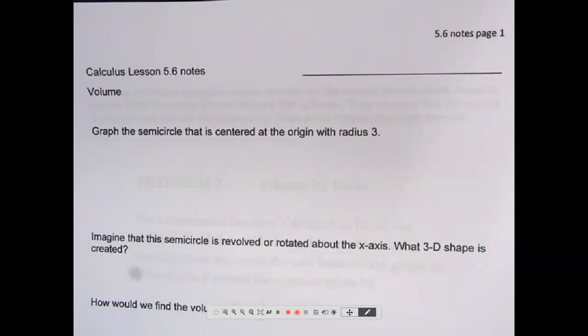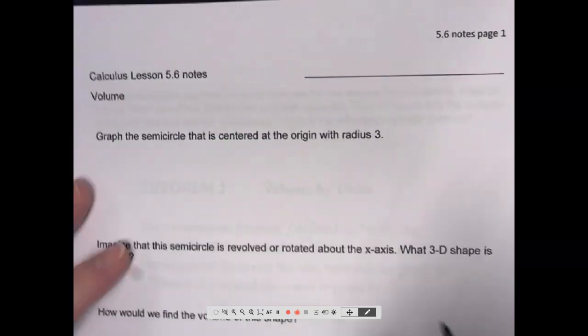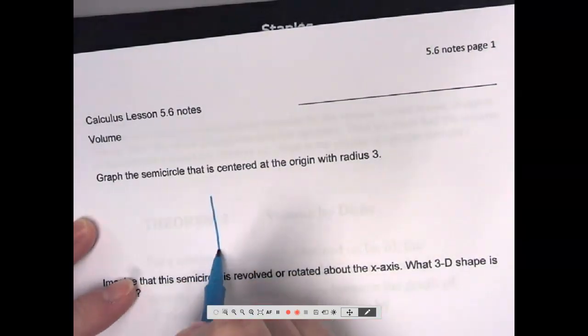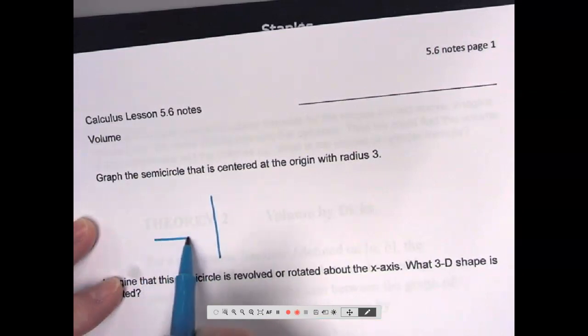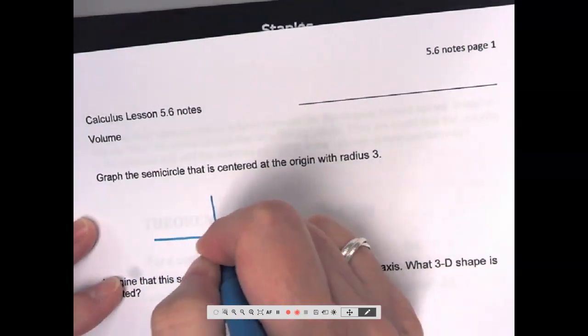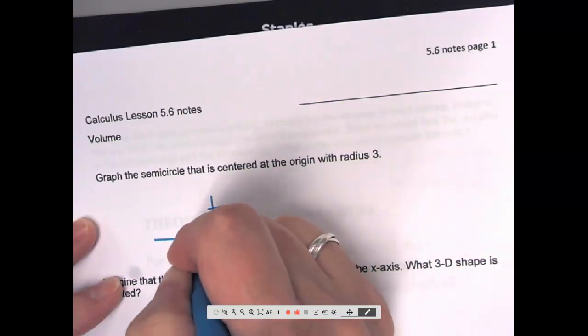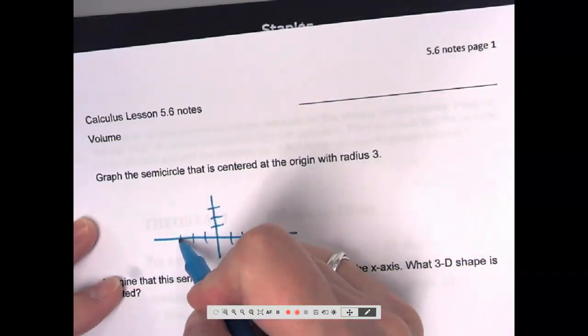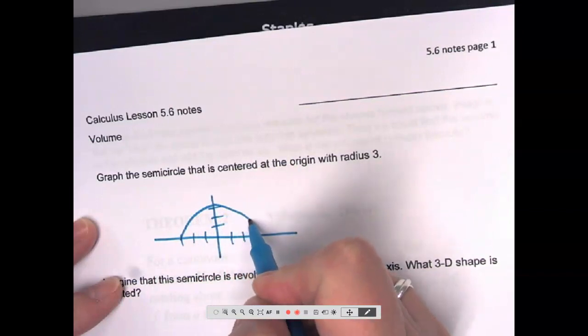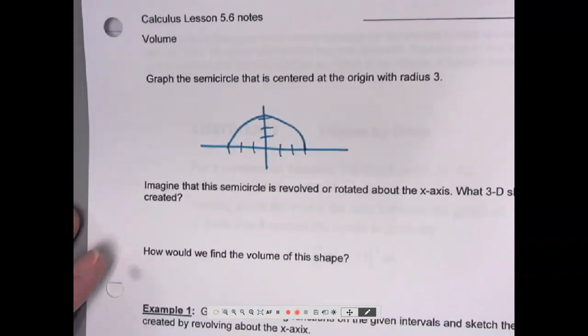So let's start by, we're going to graph a semicircle that is centered at the origin with radius 3. So we're going to graph the top portion of that semicircle. If I go up 3, and out 3, and out 3, then my semicircle would look something like that.